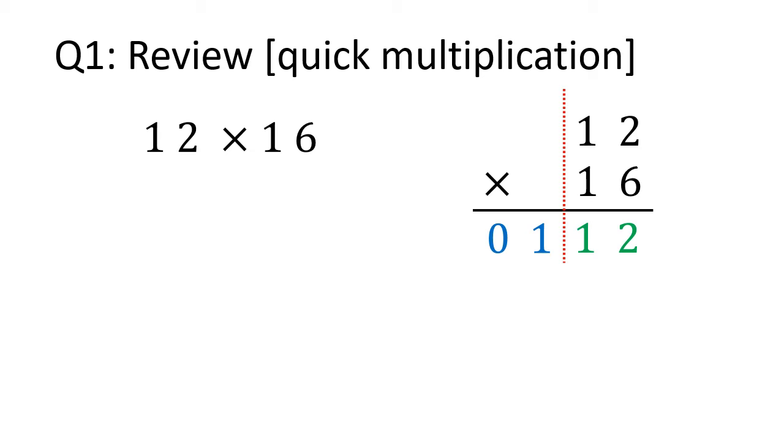Now we do cross multiply and we place the values between these lines. 2 times 1 is 2, and we place 02 here. And 1 times 6 is 6, so we place 06 here.